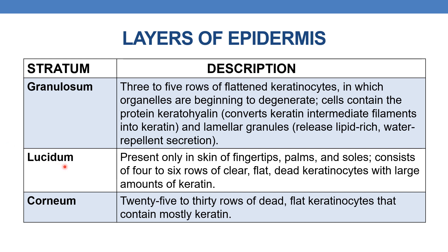The next layer is stratum lucidum, present only in the skin of the fingertips, palms, and soles. It consists of 4 to 6 rows of clear, flat, dead keratinocytes with large amounts of keratin. Finally, stratum corneum consists of 25 to 30 rows of dead, flat keratinocytes that contain mostly keratin. This is the topmost layer of the epidermis, and thickening of the stratum corneum leads to the formation of a callus.